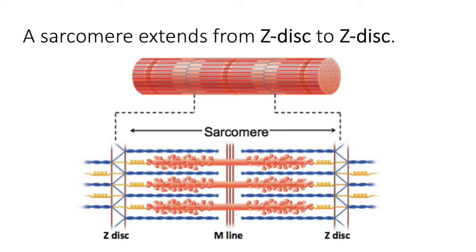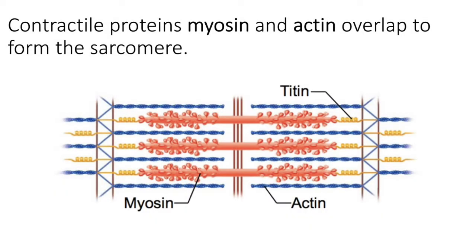Now let's identify those red fibers and those blue fibers. The red fibers that seem to have little heads protruding off of them are called myosin — the thick myofilament — and those are anchored to the m-line. The thin filaments are called actin, and actin is anchored to the z-disc. At rest, this overlapping of actin and myosin, with myosin anchored in the middle and actin anchored at the edges, creates this striated appearance.